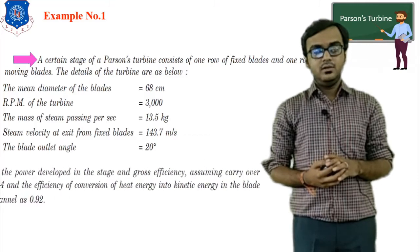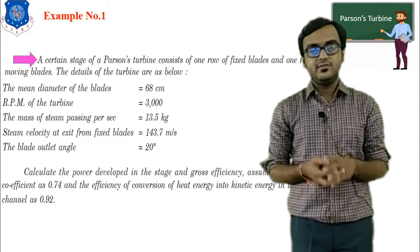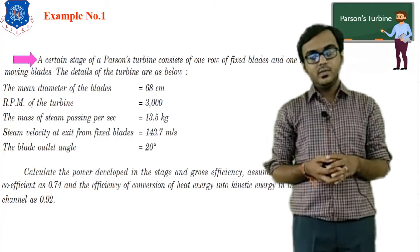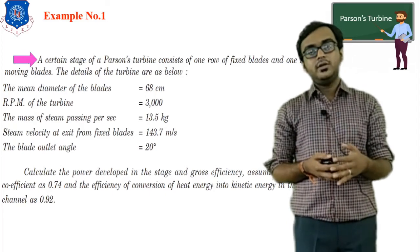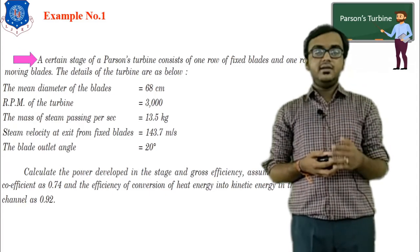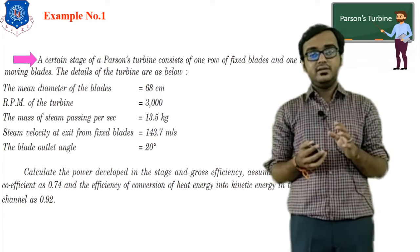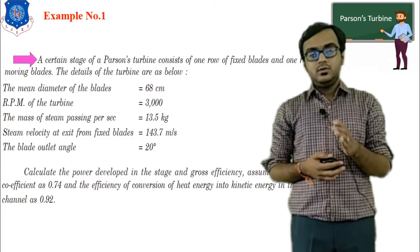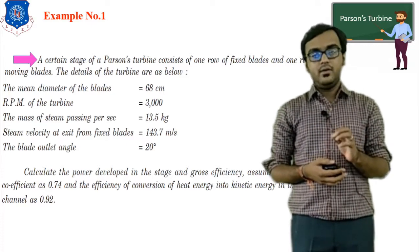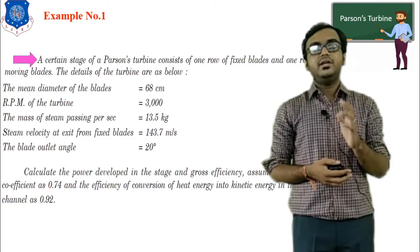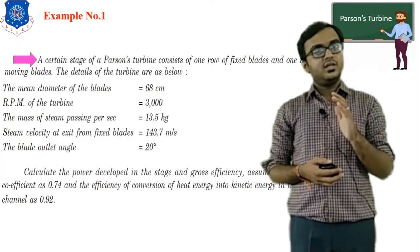In this example we need to find the power developed in the stage and the gross efficiency of the turbine. The assumptions are: carry-over losses coefficient ψ = 0.74, and efficiency of conversion of heat energy to kinetic energy — that is, enthalpy drop equal to change in kinetic energy — is 0.92.